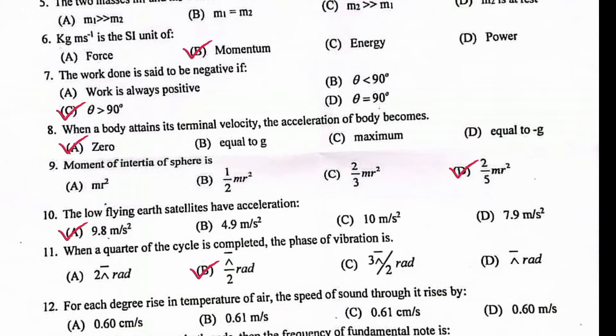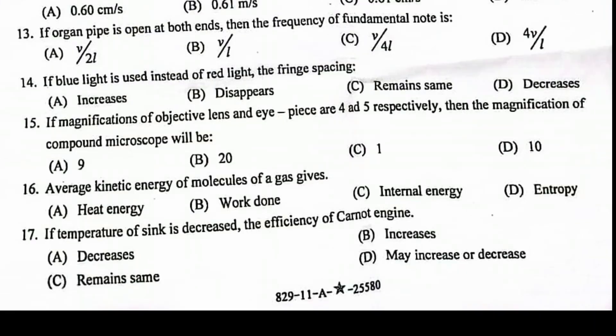For each degree rise in the temperature of air, the speed of sound through it rises by 0.61 meter per second. If the organ pipe is open at both ends, then the frequency of fundamental note is V over 2L.